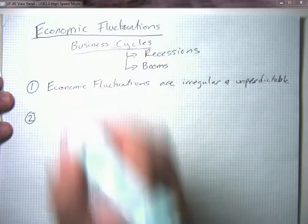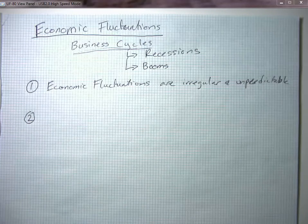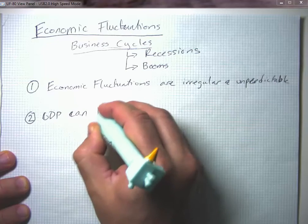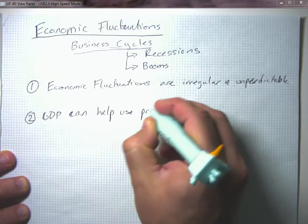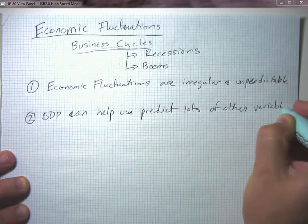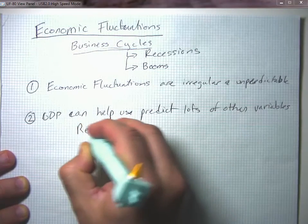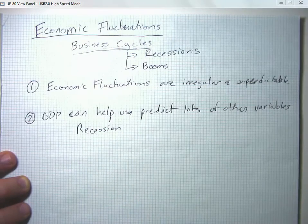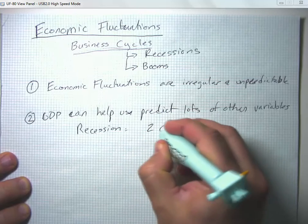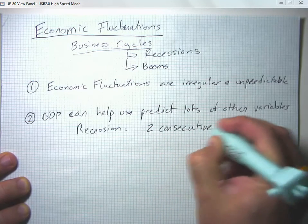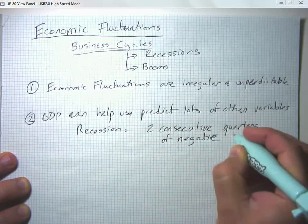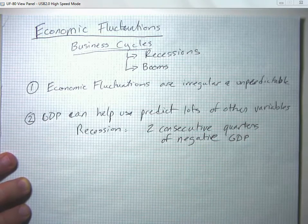That's why we prefer to call it an economic fluctuation rather than a business cycle. The second stylized fact is that GDP can help us predict lots of other variables. A common definition of recession is two consecutive quarters — two consecutive three-month periods — of negative GDP growth.